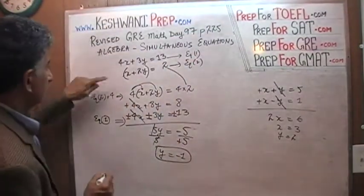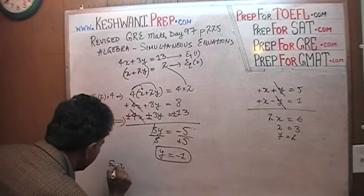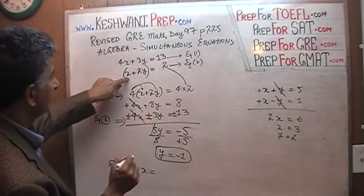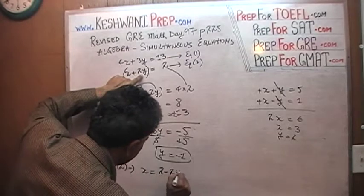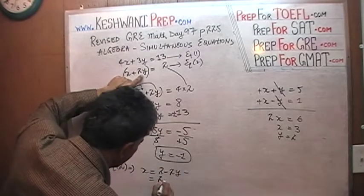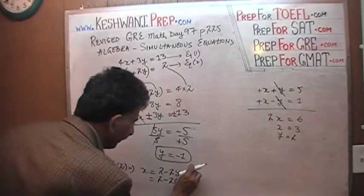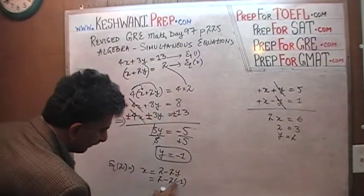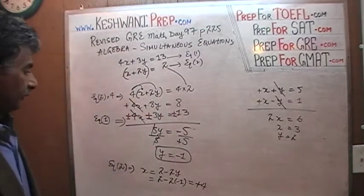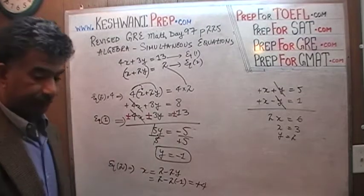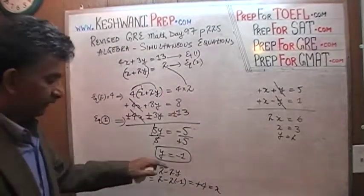Now that we have the value of y, we can solve for x. Let's take the second equation: x equals 2 minus 2y. We just found that y is negative 1, so 2 minus 2 times negative 1 — negative 2 times negative 1 is positive 2 — so it becomes 4. Those are the values: x equals 4 and y equals negative 1.